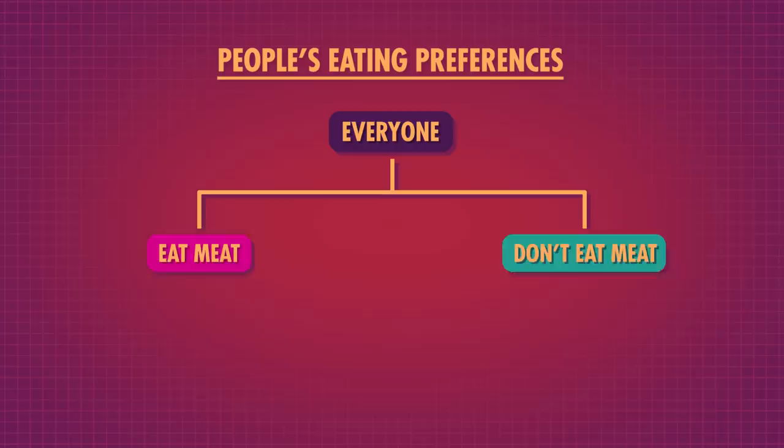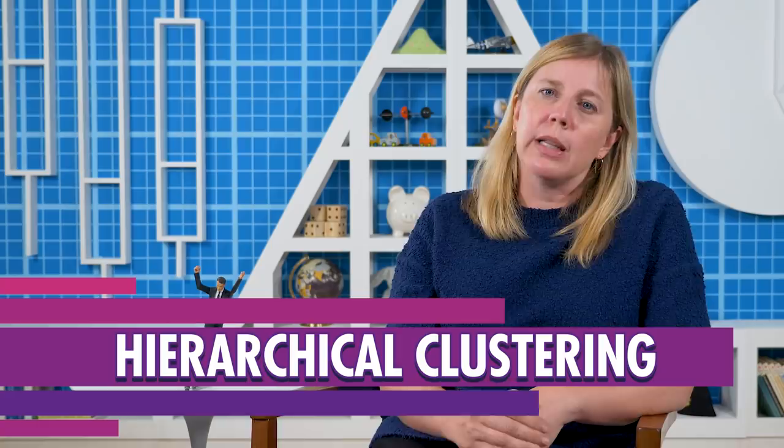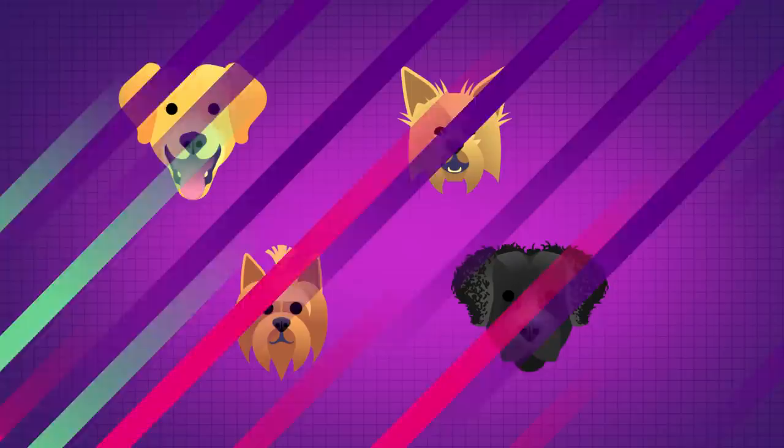Putting data into groups is useful, but sometimes we want to know more about the structure of our clusters — like whether there are subgroups or subclusters. In real life, we could look at two groups: people who eat meat and those who don't. The differences between the groups' health or beliefs might be interesting, but we also know that people who eat meat could be broken up into even smaller groups, like people who do and don't eat red meat. A different type of clustering, called hierarchical clustering, allows you to look at the hierarchical structure of these groups and subgroups.